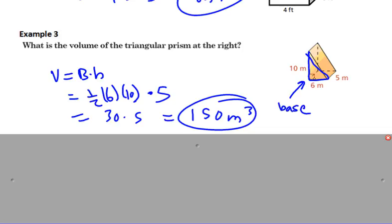If you looked at the 6 times 5 being the base, that would be 30 multiplied by the height would be 300. But since it's a triangular prism, then you'd have to divide it by 2, and you'd get 150 that way too.